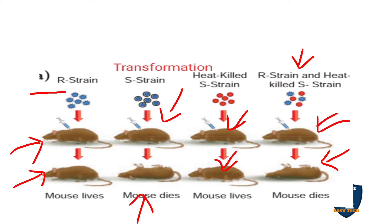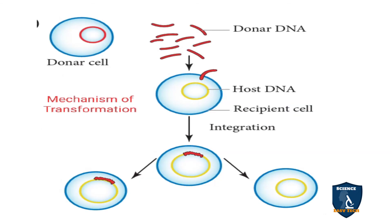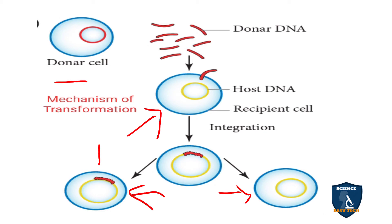This transformation was studied by Griffith, and you will study it again next year. In the mechanism, the donor DNA enters into the recipient (host) cell. They multiply, and one will acquire the transformation — gaining that DNA — while another won't. The integrated DNA which has this capacity causes death to the organism. This is the procedure for transformation.